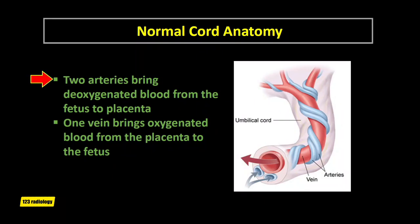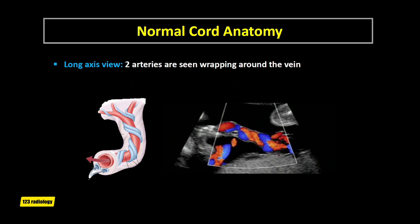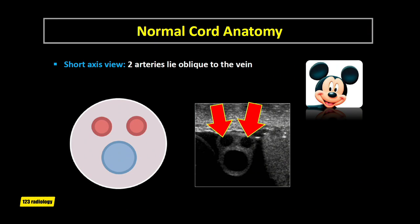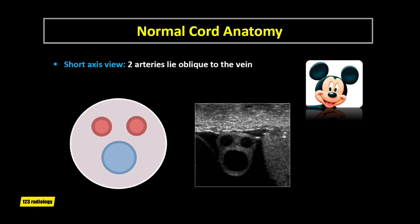The umbilical arteries carry deoxygenated blood from the fetus to the placenta, while the umbilical vein carries oxygenated blood from the placenta to the fetus and is connected with the left portal vein in the fetal liver. The two umbilical arteries follow a helical course around the umbilical vein. On sonographic long axis view, the two arteries are seen wrapping around the vein. In short axis view, the two arteries lie oblique to the vein, giving a Mickey Mouse appearance — the arteries represent Mickey's ears and the vein represents Mickey's face.